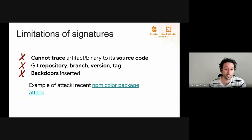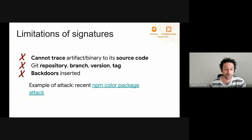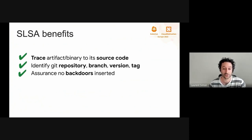Let's take again the example of the NPM caller attack. The NPM maintainer pushed directly to the NPM registry, so the maintainer had access to the credentials — and would probably have had access to the signing key as well, if signatures had been used. SLSA provenance solves this problem by including who created an artifact and what source code was used to create it. In a nutshell, SLSA provenance allows tracing an artifact back to its origin, including the exact source code, repository name, commit hash, and branch.